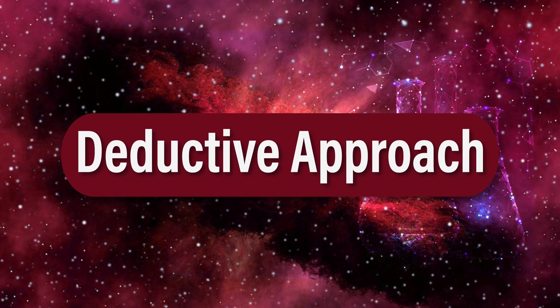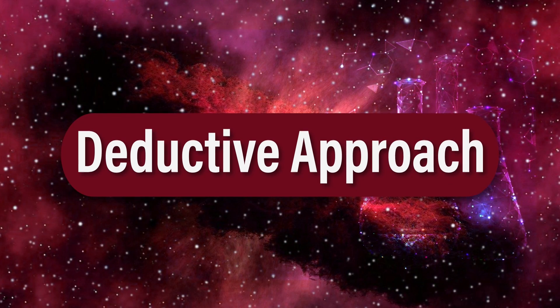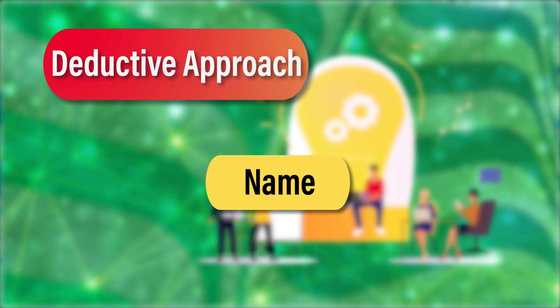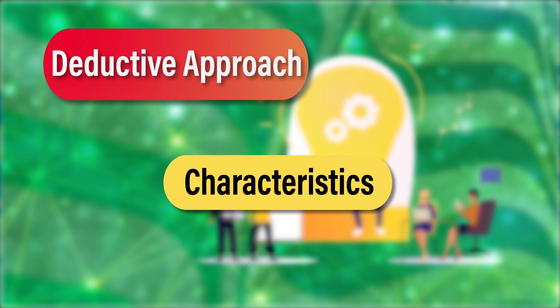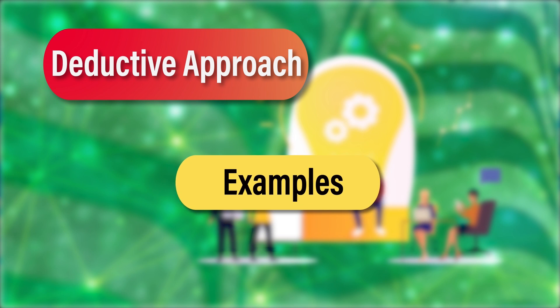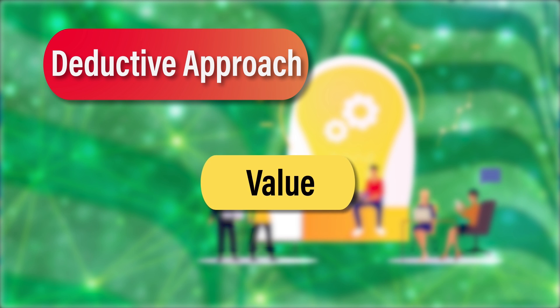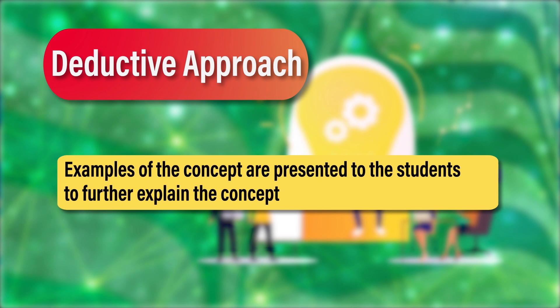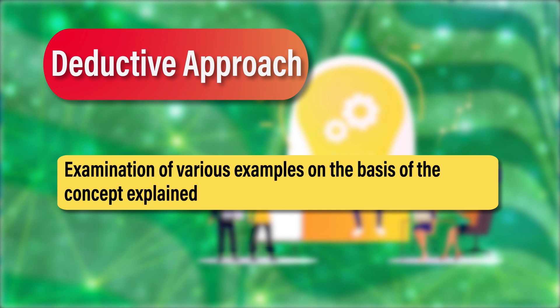So first, we'll begin with the deductive approach. The deductive approach is where the lesson begins with introduction and explanation of the concept. As we know, a concept has five aspects: a name, a definition, certain characteristics, some examples, and a value. If the teacher is following a deductive approach, she or he is going to give the concept name at the very beginning of the lesson, along with the definition and characteristics, which provide the explanation of the concept. After this, the teacher is going to discuss various examples of the concept, and using these examples, will further clarify the concept.